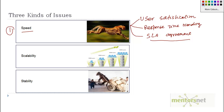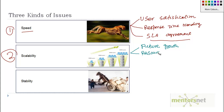The second kind of issue is scalability — is the system scalable enough to support future business growth? Related to this is resource consumption: for example, what is my electricity bill, cooling system requirement, or CPU utilization of a server when running a data center?